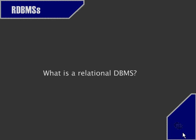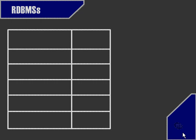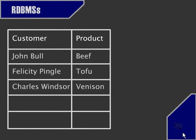To answer this, let's take a look at a practical example. Let's say we run a shop and we're storing our data in some kind of table form. We need to know when people come in what they've bought, because our shop uses credit, so at the end of the month when we settle accounts with our customers, we know exactly what they've bought. We have a customer and a product column in our table. John Bull comes in and buys some beef. Felicity Pingel buys some tofu. And Charles Windsor pops in to buy some venison.